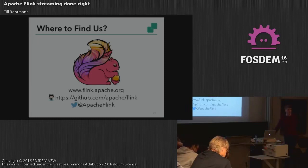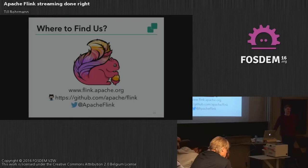When snapshotting to local disk, how do you ensure fault tolerance? With local disks, of course, they don't have fault tolerance. You would have to set it to HDFS, for example, where data is replicated.